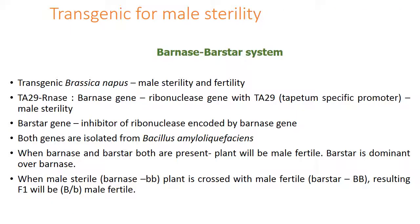Coming to transgenic male sterility in Brassica — the Barnase and Barstar system. Male sterility and fertility restorer are developed using a TA29 promoter with RNA activity induced in the Barnase gene. The Barnase gene has ribonuclease activity with TA29 tapetum-specific promoter — this confers male sterility. Barstar gene is an inhibitor of the ribonuclease encoded by Barnase. Both genes are isolated from Bacillus amyloliquefaciens. When both Barnase and Barstar are present, the plant will be male fertile, as Barstar is dominant over Barnase. When male sterile (Barnese recessive bb) is crossed with male fertile (Barstar dominant BB), the F1 heterozygous form (Bb) will be male fertile.